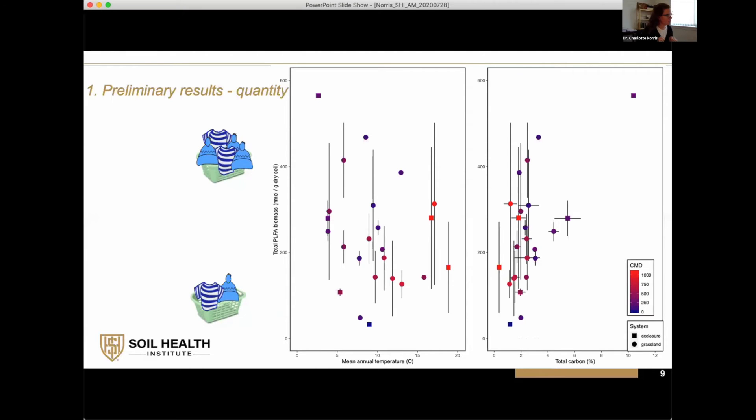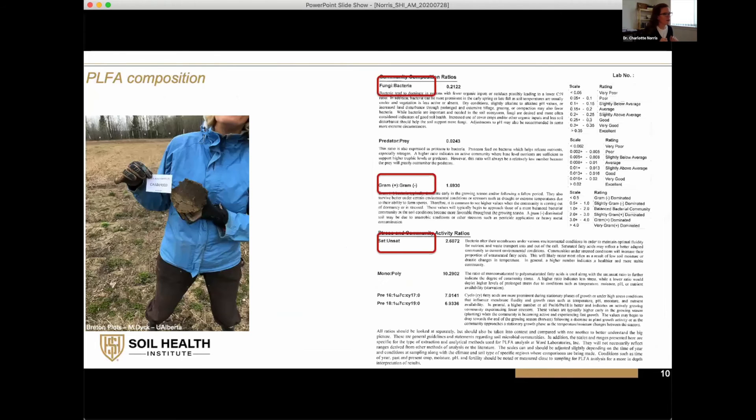Getting into the idea of composition, talking about who's there. It's often discussed in the literature in terms of fungal to bacterial ratio, gram-positive to gram-negative ratio, or saturated to unsaturated. This gives the type of organism that the biomarkers might be associated with.